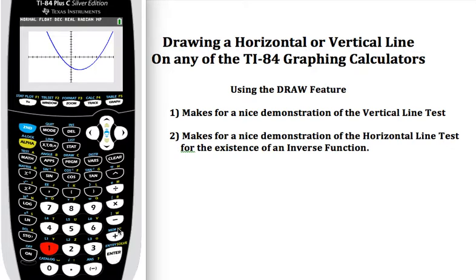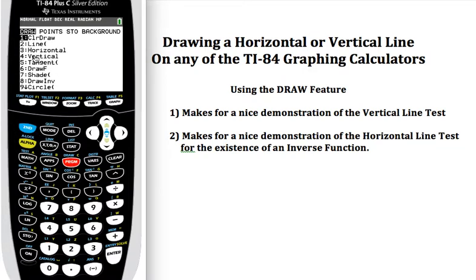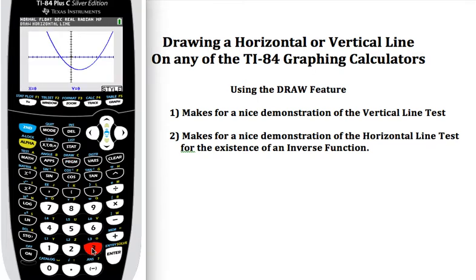Similarly, if you wanted to do a horizontal line test, I could go second and draw, selecting three would give you the horizontal line. And again here, this one I'm moving up and down.